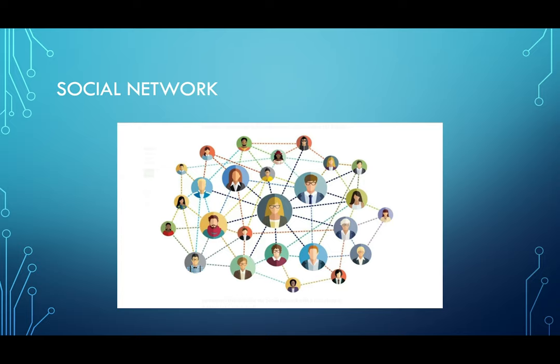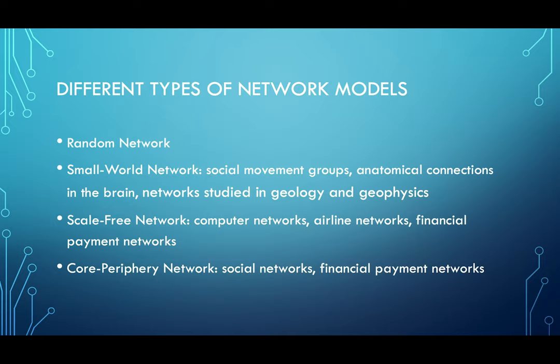I'm going to briefly discuss a couple of different types of network models. The first network model I'd like to introduce is a random network. In the random network, each node has a probability P to be connected with all the neighboring nodes. The random network is a simple yet very powerful network, considered as a representative of a more homogeneous network, because each node has on average a similar number of neighbors.